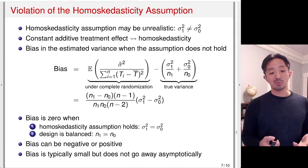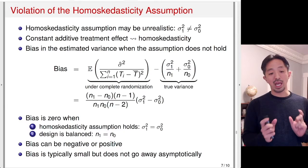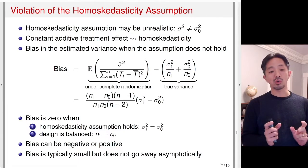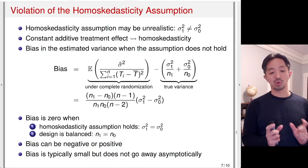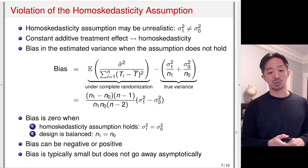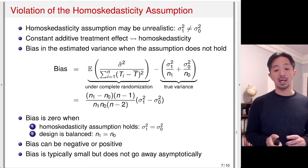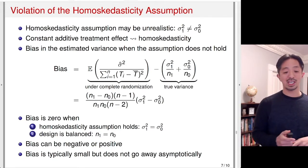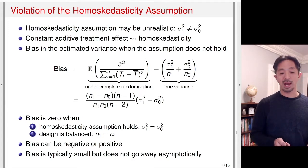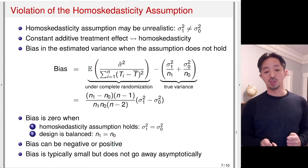The bias is typically small, especially when N_1 and N_0 are close. However, this difference doesn't vanish asymptotically — the bias persists even with large sample sizes.